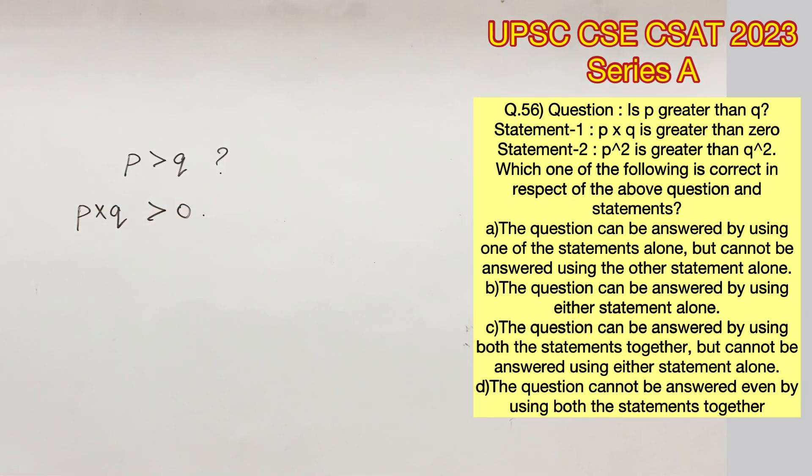The first statement says P into Q is greater than zero. With this statement alone, it's clearly not possible for us to determine if P is greater than Q because product of two numbers in any order is going to provide us with the same result.